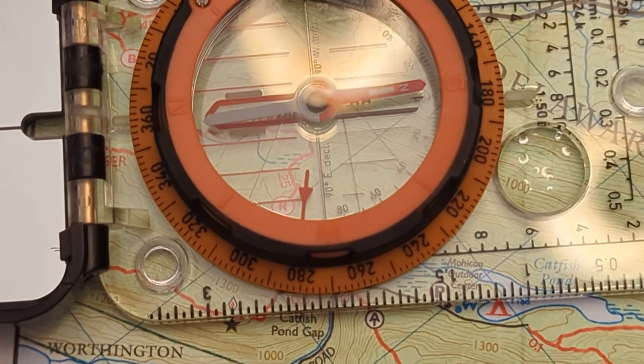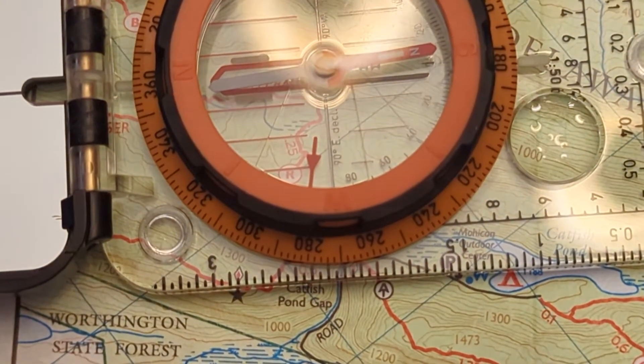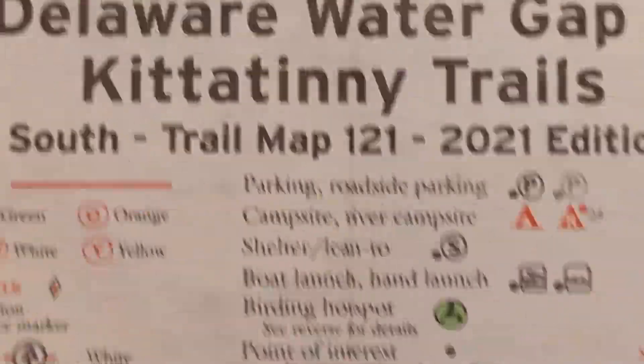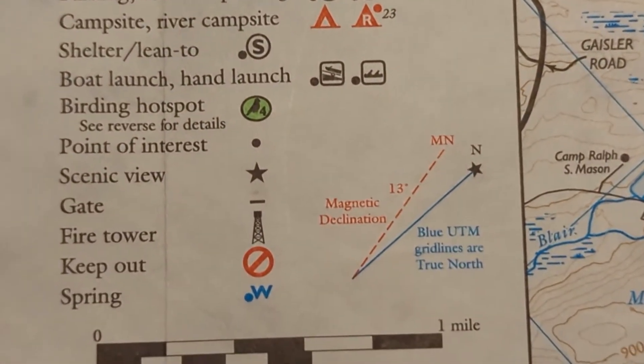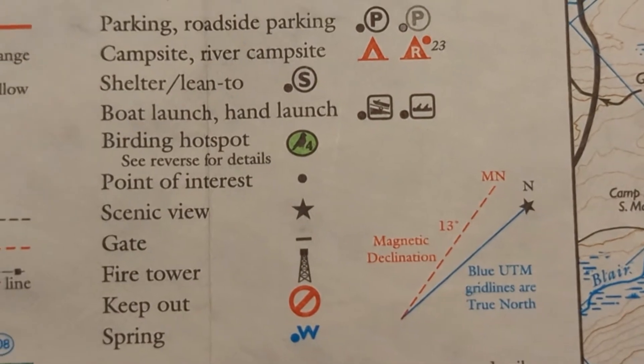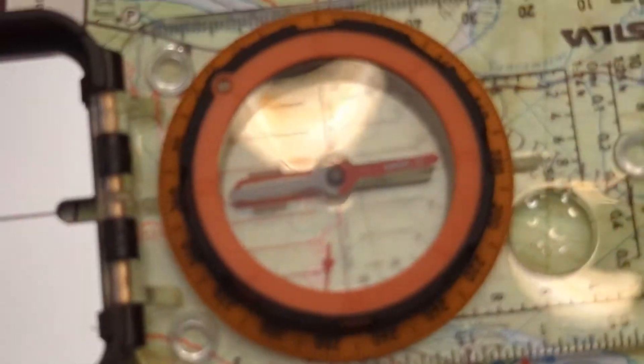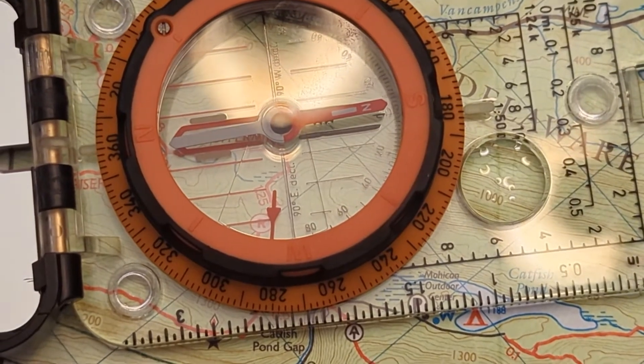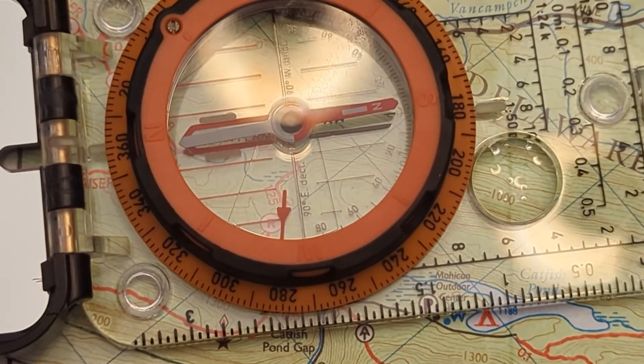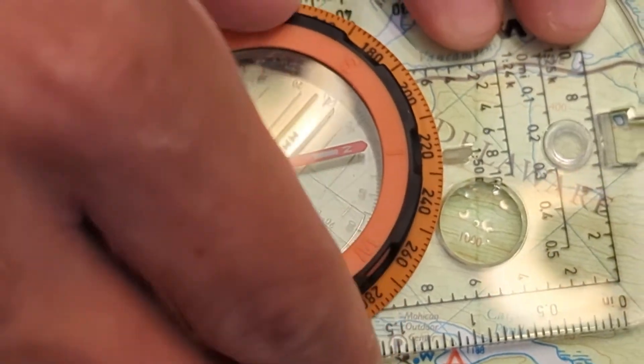Look at your map key to confirm which direction is north. Spin the compass's bezel to line up north with north on the map.